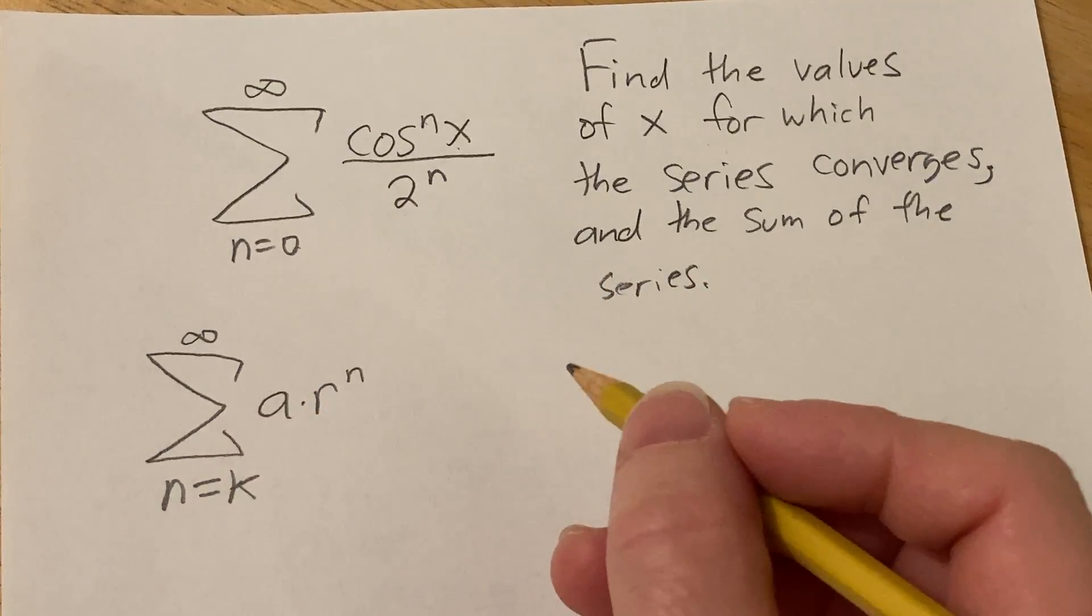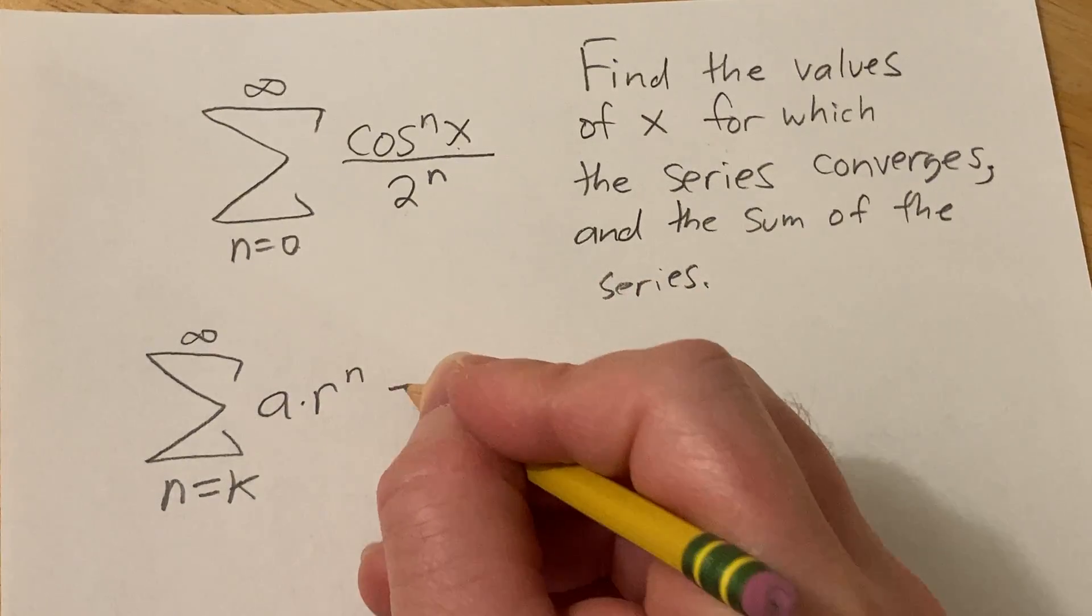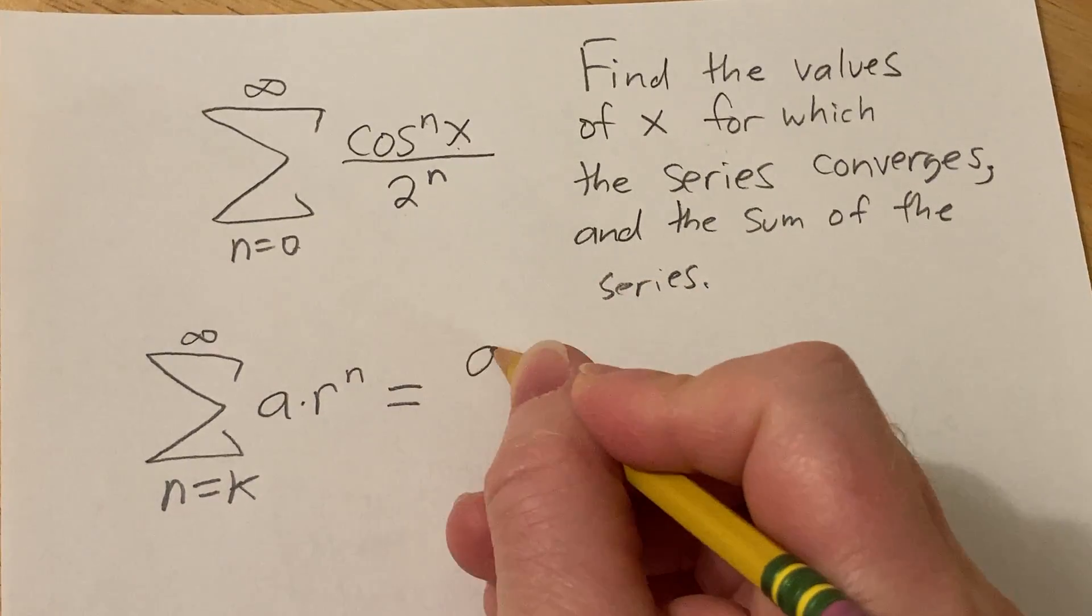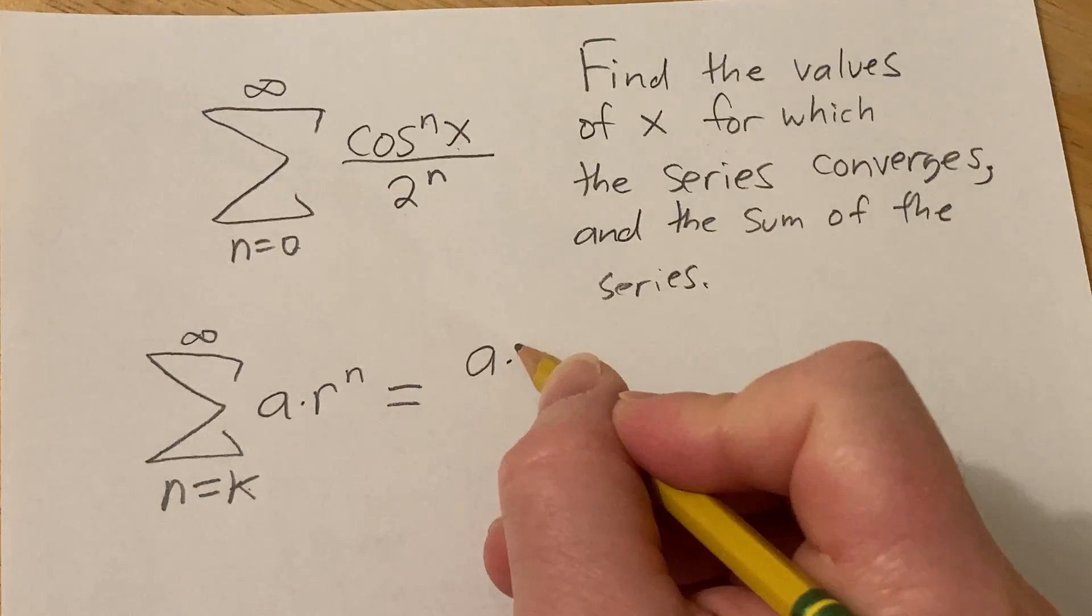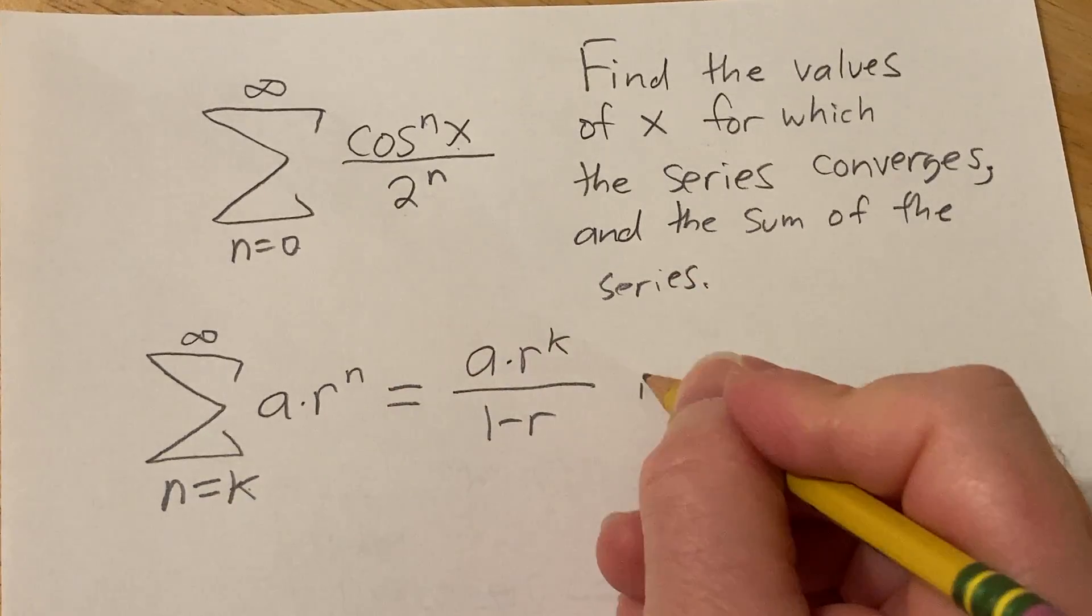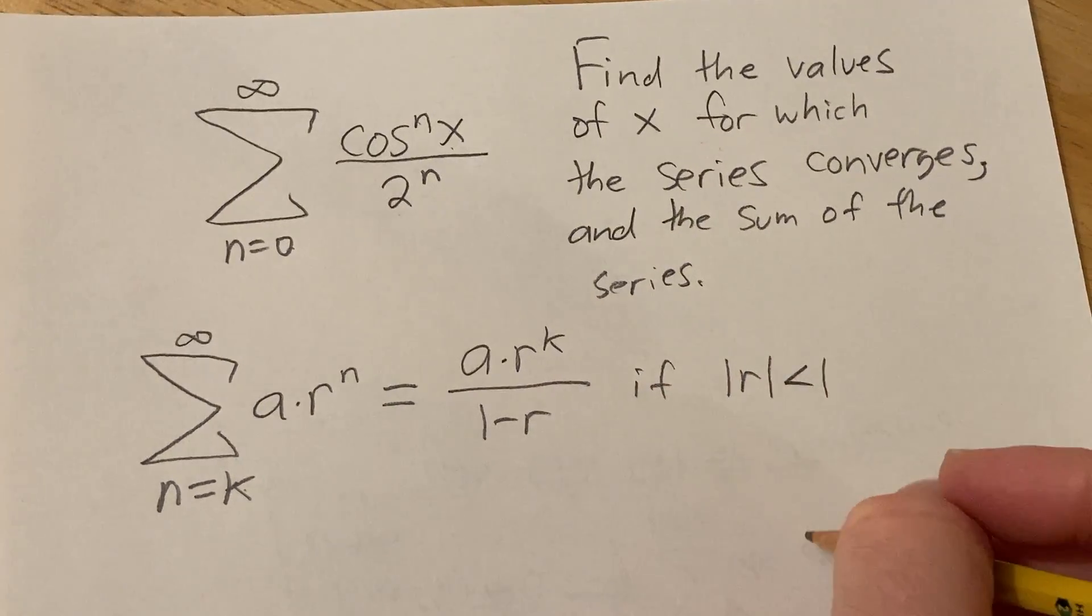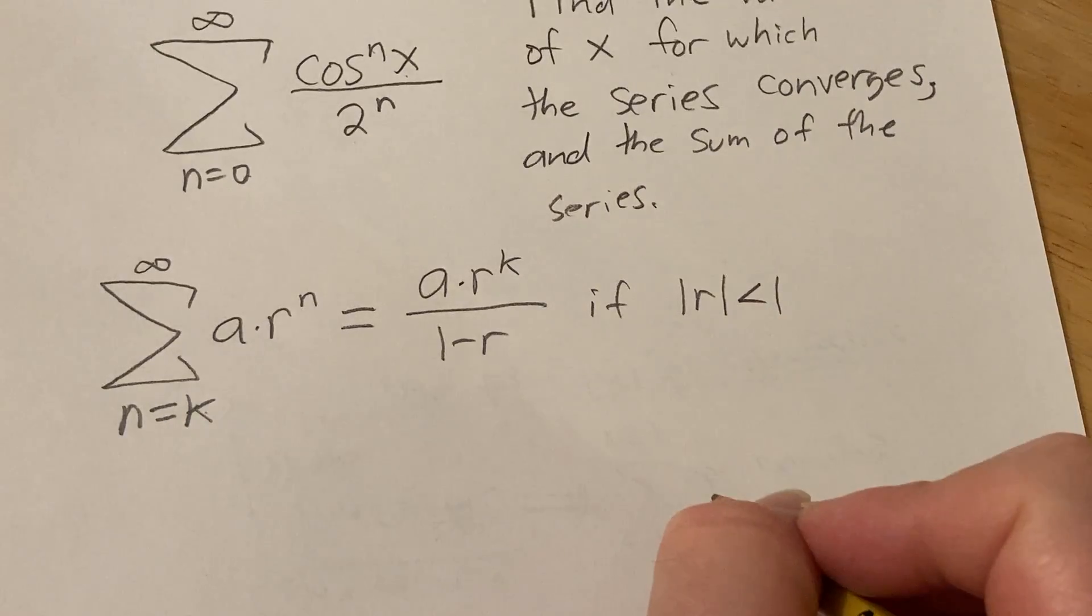So basically, this series is going to be equal to a times, you just put the k where the n is, r to the k over 1 minus r. And this is going to be true if the absolute value of r is less than 1, okay? So that's when it's true.